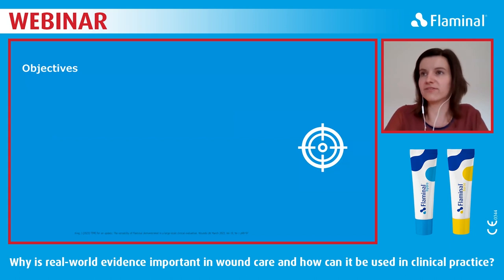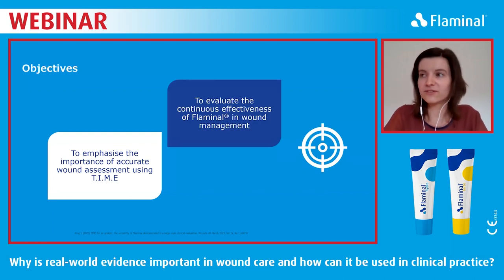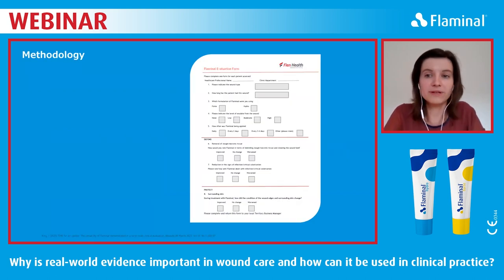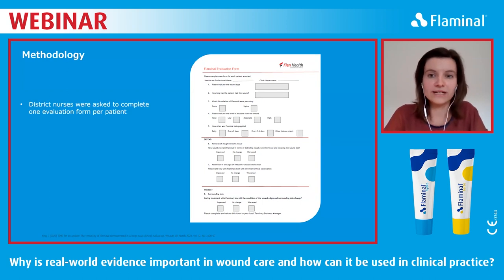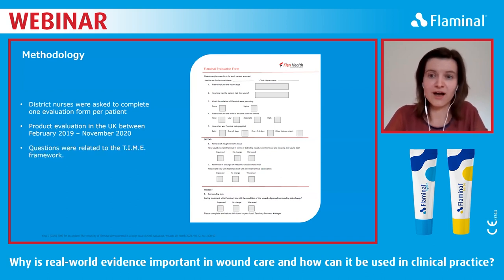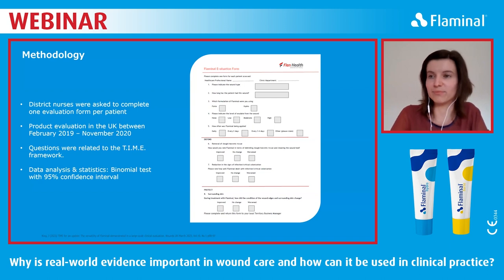Being applied with so many patients, we wanted to know about the performance and clinical effectiveness of Flaminal. To do this, we used the wound assessment framework TIME, which is the most commonly used wound assessment tool in Europe. TIME, as an acronym, stands for tissue, infection, moisture, and edges — and is a clinical decision support tool providing a structured approach to wound bed preparation. This publication is an example of real-world evidence that can be utilised to support evidence-based practice. The two key objectives were: first, to emphasise the importance of accurate wound assessment using the TIME framework; and second, to evaluate the continuous clinical effectiveness of Flaminal in wound management. We asked UK district nurses to complete one evaluation form per patient, performed between February 2019 and November 2020. Data was analysed using a standard binomial test.